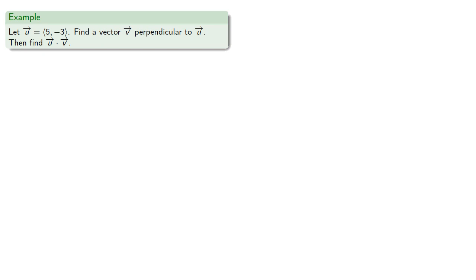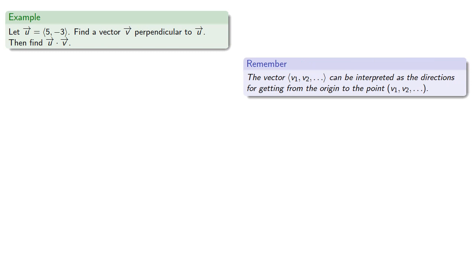Then find the dot product. So remember, the vector can be interpreted as the directions for getting from the origin to the point with the same coordinates. So the vector tells us how to get from the origin to the point (5, -3).